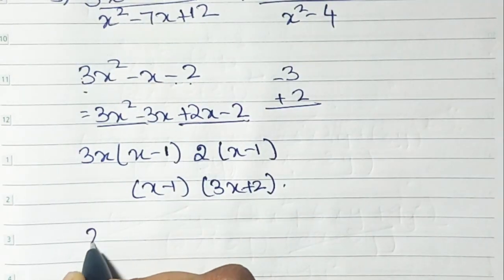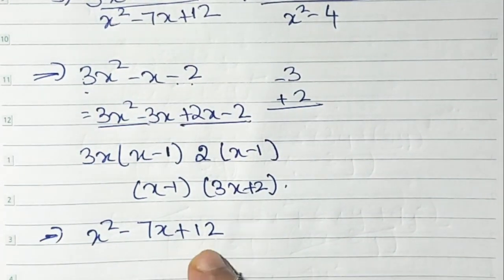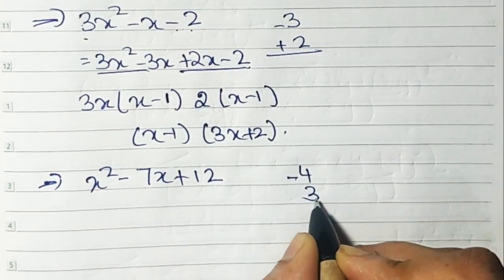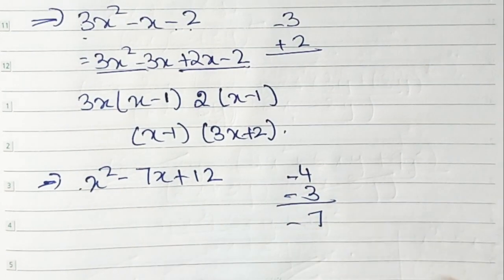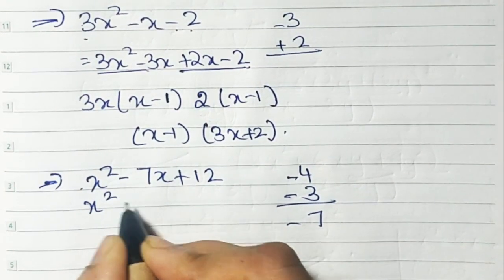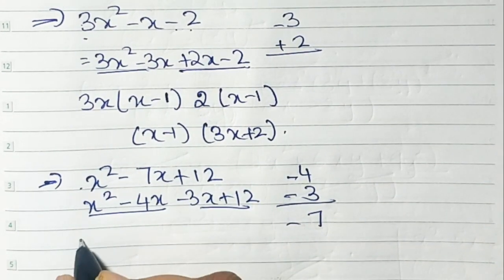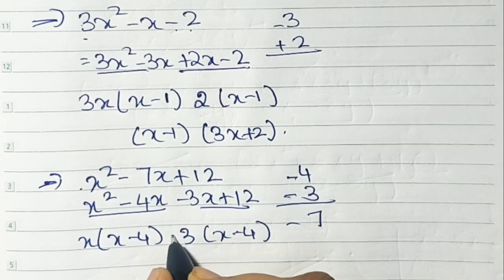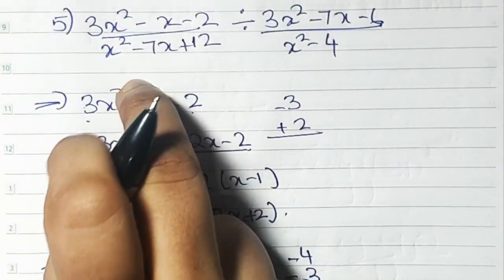For x² - 7x + 12, break 12 to get 7: factors 4 and 3, both negative, giving -7. So we get (x - 4)(x - 3) after grouping and taking common factors.